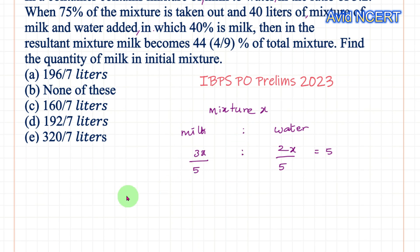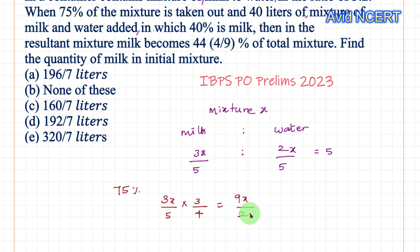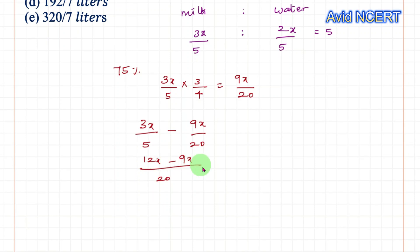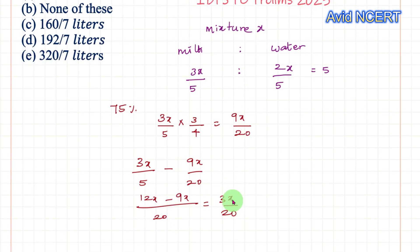Now, 75% of the mixture is taken out — that is 3/4 of the mixture is removed. So out of 3x/5, we remove 75% which is 3/4, giving 9x/20 removed. The remaining milk is 3x/5 minus 9x/20. With LCM = 20, that is 12x/20 minus 9x/20, which equals 3x/20. So the amount of milk remaining after removing 3/4 of the mixture is 3x/20.